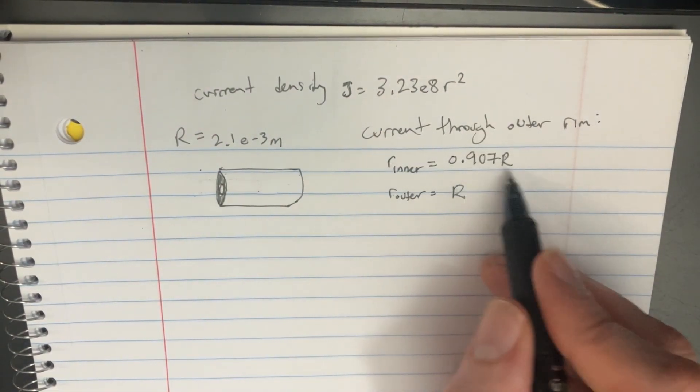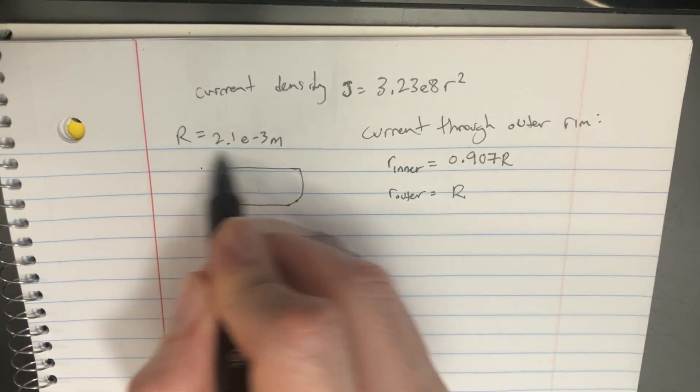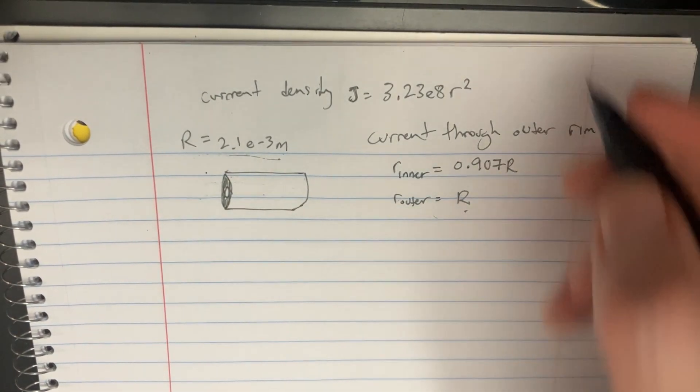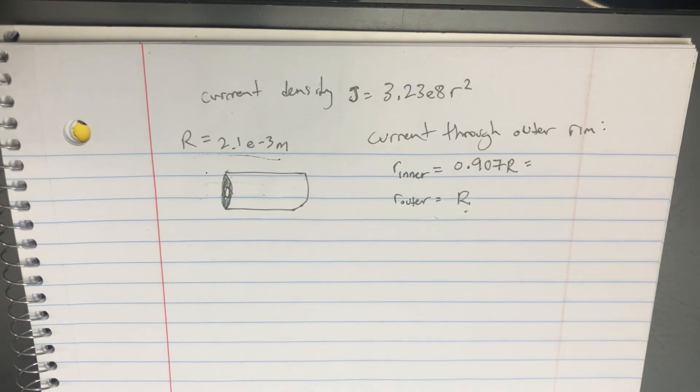The inner radius is going to be almost that quantity, and the outer radius is that quantity. Let's recalculate these a little bit.